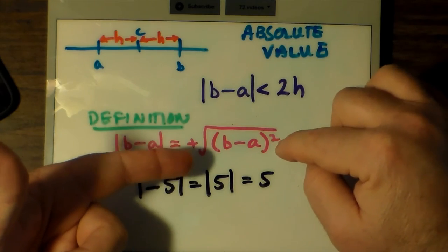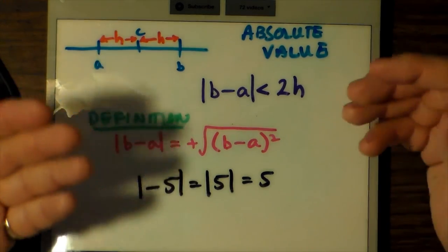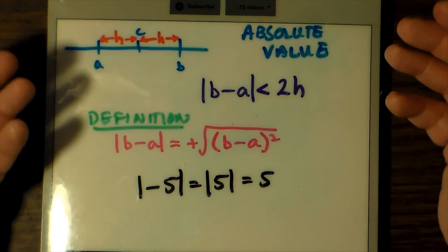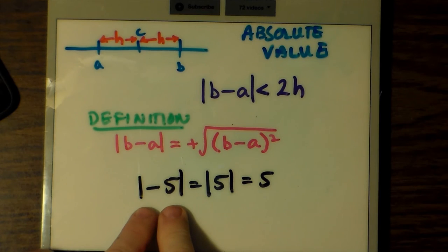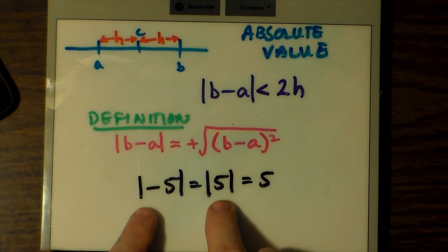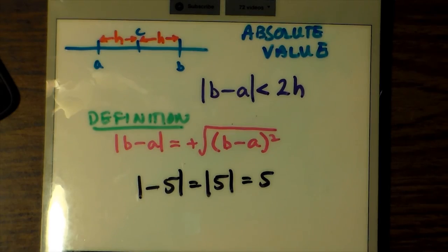By this notation, we only take the positive square root. This has the effect of making any number positive regardless of its original sign. In practice, we just strip the minus sign if it is there. For example, the absolute value of minus 5 is the same as the absolute value of 5, which is the same as the absolute value of minus 5 plus positive 5.